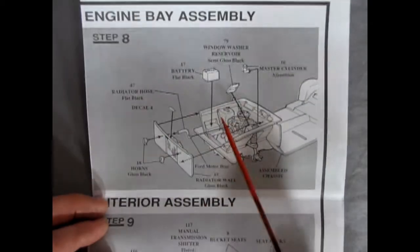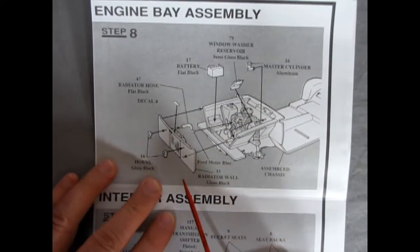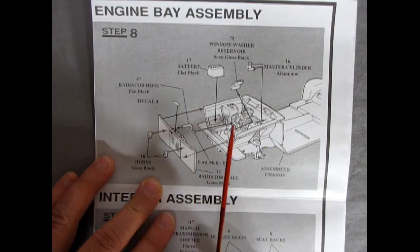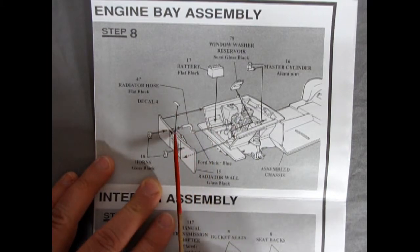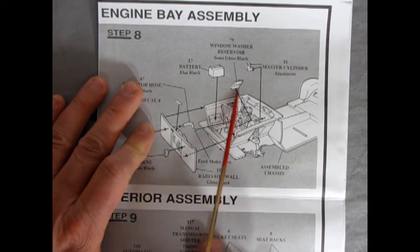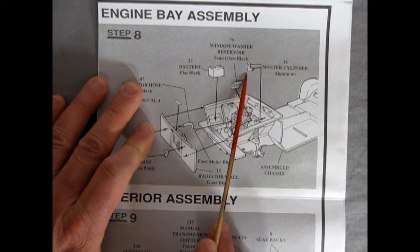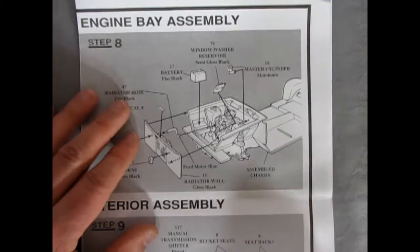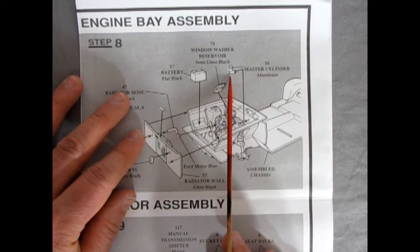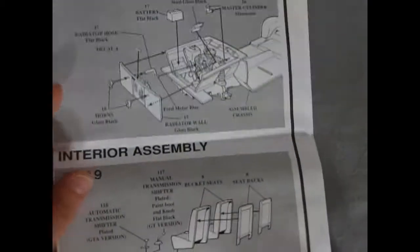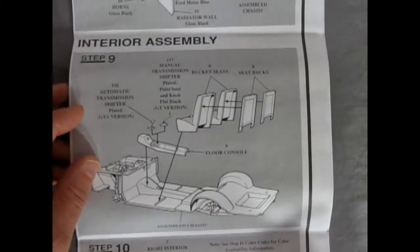So then we have step eight. The engine bay assembly. So now you're getting your radiator wall and your horns and the upper radiator hose as well as a decal going on your radiator. The battery. The old bags for your windshield washers. And a master cylinder which would go in there for your brakes. Now it's interesting this is not a power assisted brake. It's an actual non-power assisted so you'd have to push down harder on the pedal.